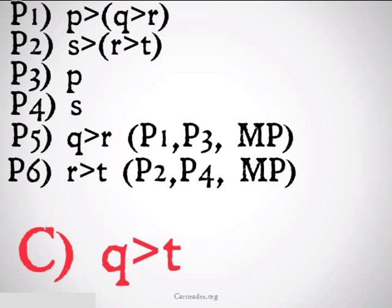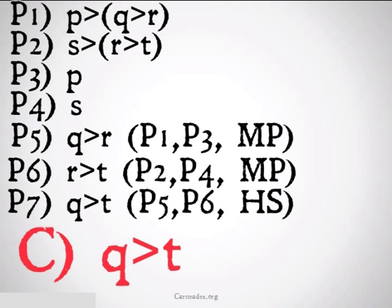Now I look at these two implications, q implies r and r implies t. How can I use these to get to q implies t? Well, I remember if the second part of one of my implications is the same as the first part of my other implication, I'm allowed to do something called hypothetical syllogism and link them together. So I do, from premise 5, premise 6, hypothetical syllogism, I conclude q implies t, which is my final conclusion, what I'm looking for.